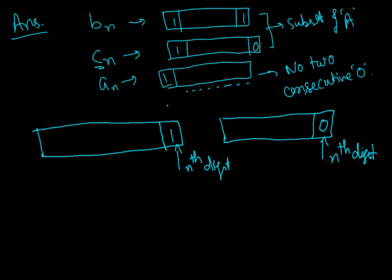In a_n, either the last digit will be 0 or 1, so I am separating this into two parts. So this and this together represents a_n.